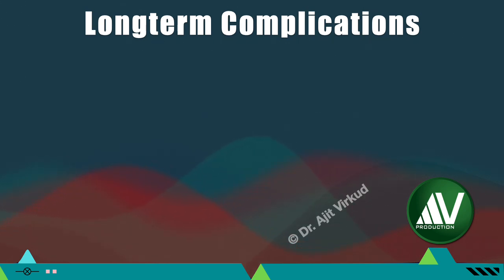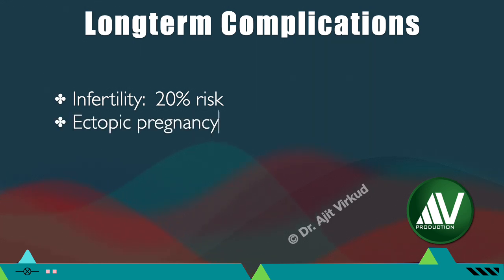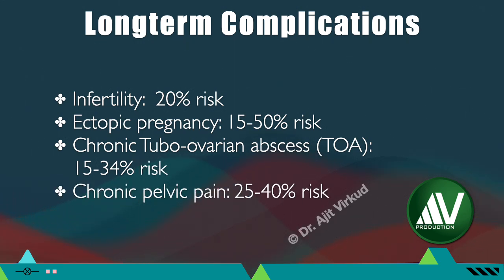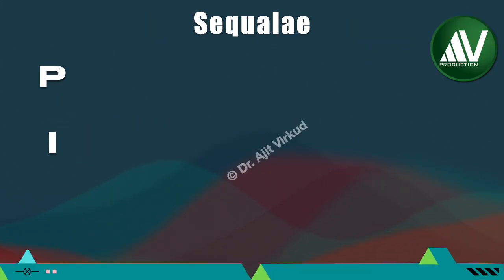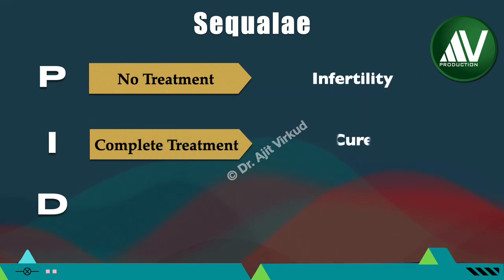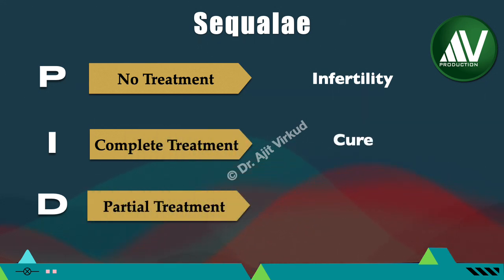Long-term complications of pelvic inflammatory disease are infertility (20% risk), ectopic pregnancy (15–50% risk), chronic tubo-ovarian abscess (15–34% risk), and chronic pelvic pain (25–40% risk). The complications depend on whether timely treatment is offered and whether it is complete or partial. When no treatment is given, the end result is infertility. If timely complete treatment is given, it can lead to cure, and if partial treatment is taken, the end result could be ectopic pregnancy.